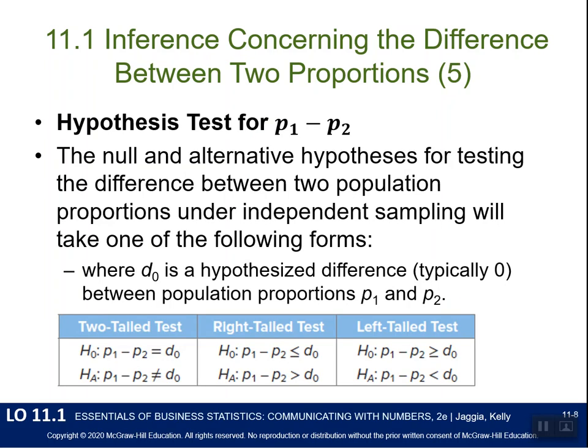The hypothesis test is very similar to Chapter 10. Assuming we want the difference to be 0 (d0), the null hypothesis always contains the equality: P1 − P2 = 0, ≤ 0, or ≥ 0. The alternative hypothesis is what we're actually testing — for example, P1 − P2 ≠ 0 means we're not saying which is greater, just that they're not equal, which is a two-tailed test.